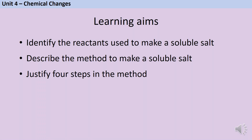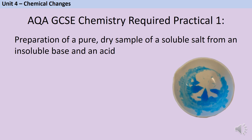By the end of this video you should be confident identifying the reactants used to make a particular soluble salt, describing the method to make that soluble salt, and also justifying four of the steps in that method. The first required practical in AQA GCSE chemistry requires us to make a pure dry sample of a soluble salt by using an insoluble base and an acid.